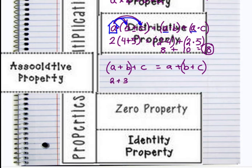2 plus 3 plus 4 equals 2 plus 3 plus 4. And we're just going to move the parentheses. Why are the parentheses there? They tell us which part of the equation to solve first. So in my first half, I'm going to solve the 2 plus 3 first, which is 5. And then I'll add my 4, and that will equal 9.